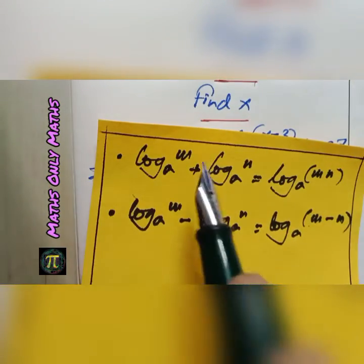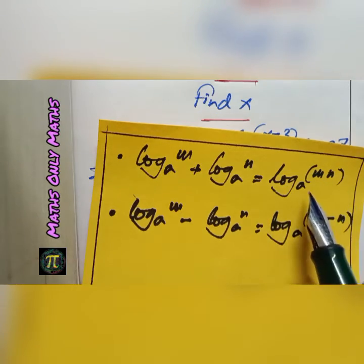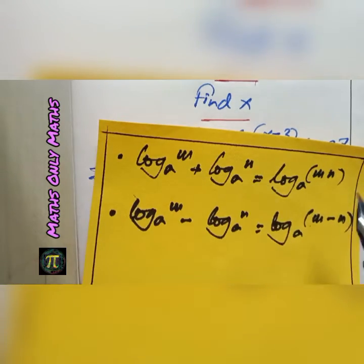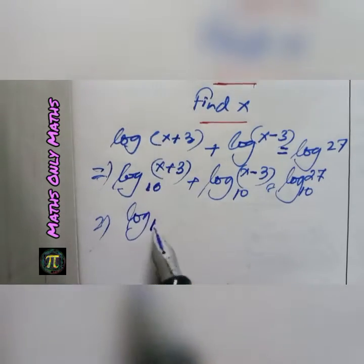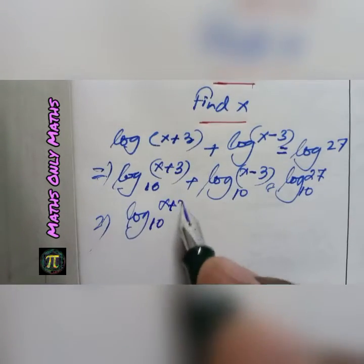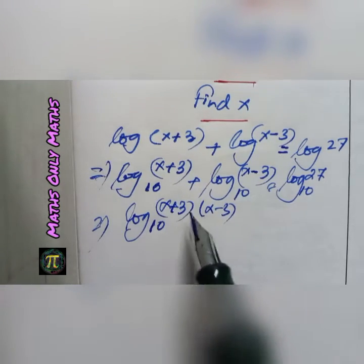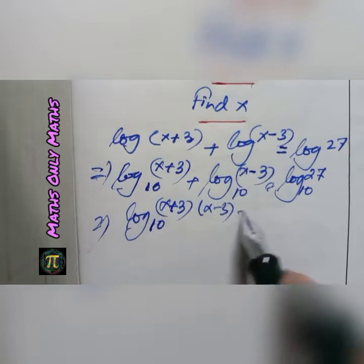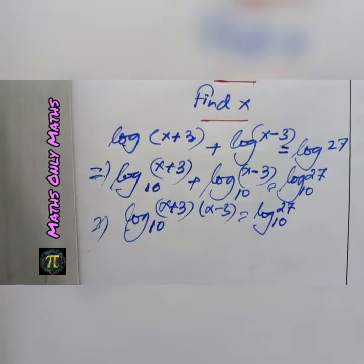Now, log m to the base a plus log n to the base a equals log mn to the base a, multiply m and n. So I get (x+3) multiply (x-3). Log of (x+3) multiply (x-3) to the base 10 equals log 27 to the base 10.